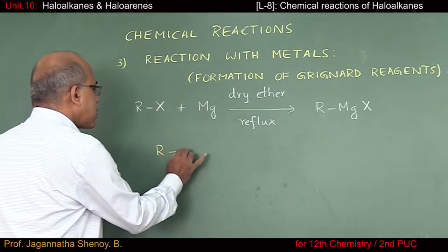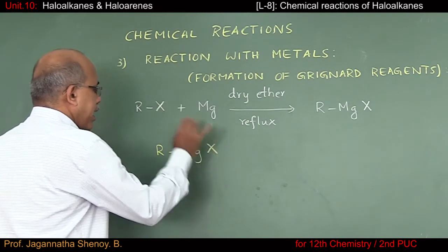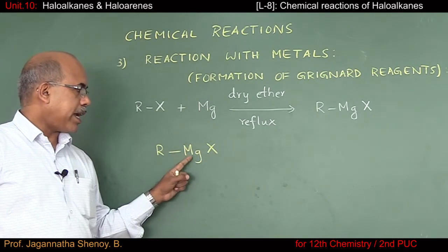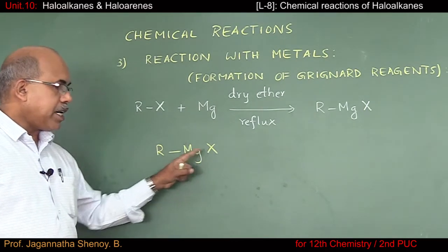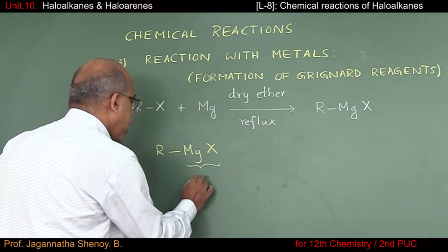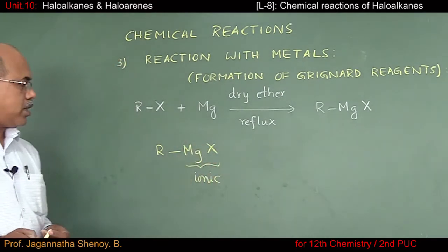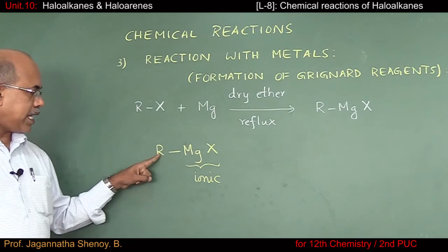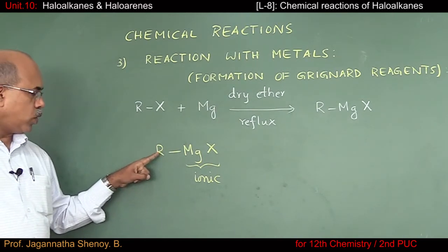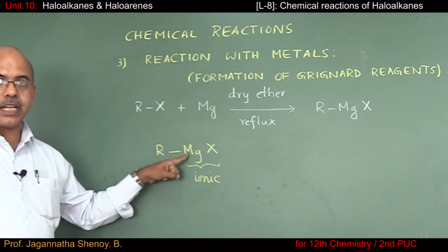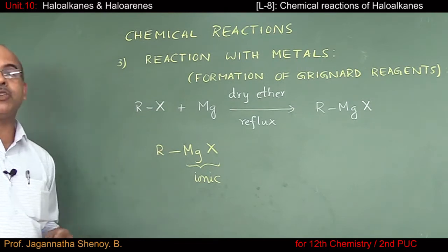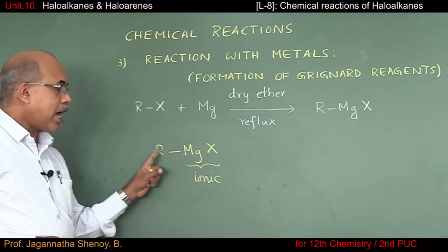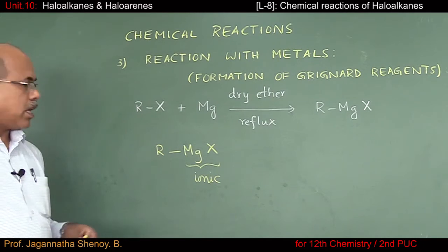We have R-MgX. There is a very high difference in electronegativity values of magnesium and halogen, which is why the bond between magnesium and halogen is ionic in nature. On the other hand, if you consider the bond between R and Mg — Mg is a metal and R contains carbon — there is a considerable electronegativity difference, but it is not sufficient for the bond to be ionic. The R-Mg bond is a highly polar covalent bond.